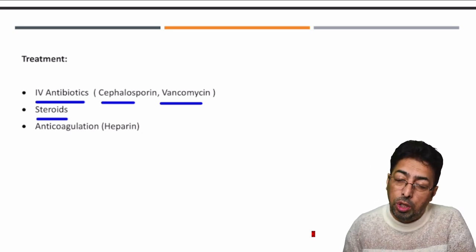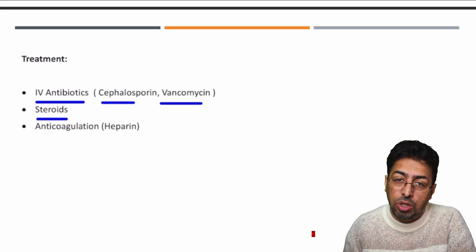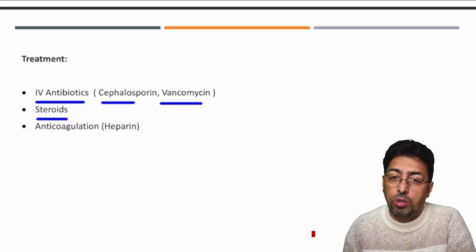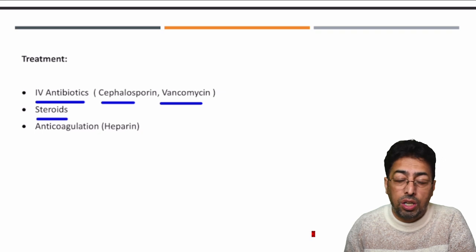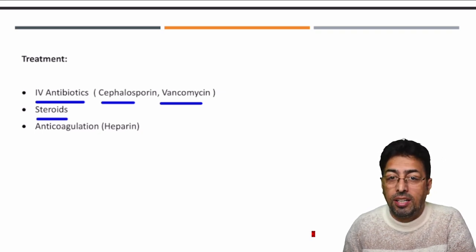To summarize: arrive at the diagnosis of cavernous sinus thrombosis, know the predisposing conditions, know the clinical presentations, and importantly, know the communications of the cavernous sinus — which are frequently asked in anatomy and surgical anatomy examinations. I hope this helps. Thanks a lot.